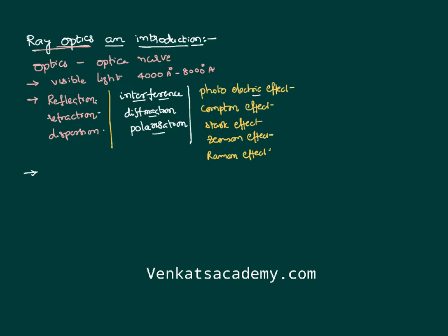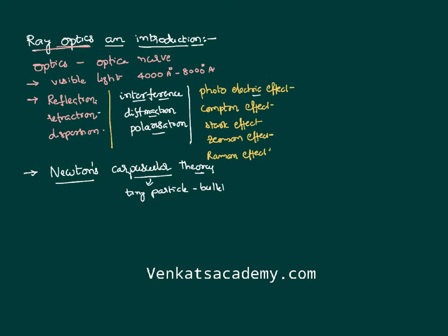To explain all these properties of light, different theories of light were proposed. Among them, the first theory was proposed by the great scientist Newton, which is called Newton's corpuscular theory. The name itself tells you: corpuscular means a tiny particle, a very small particle — like a bullet. According to Newton's corpuscular theory, every source of light emits light as corpuscles.